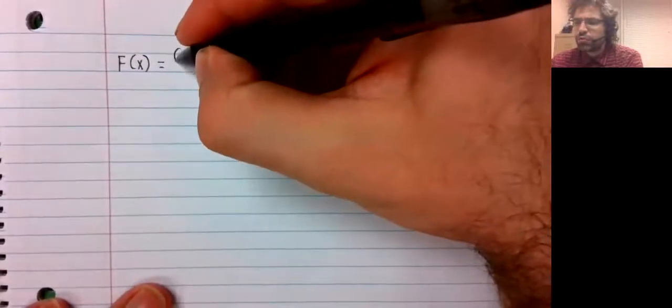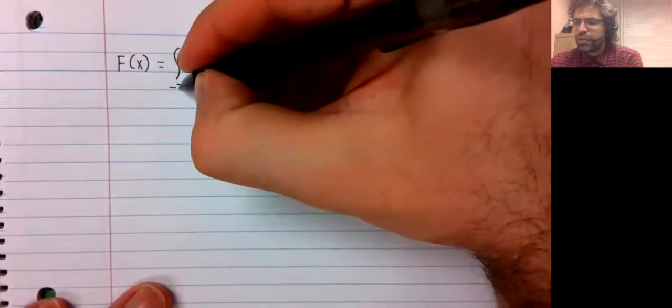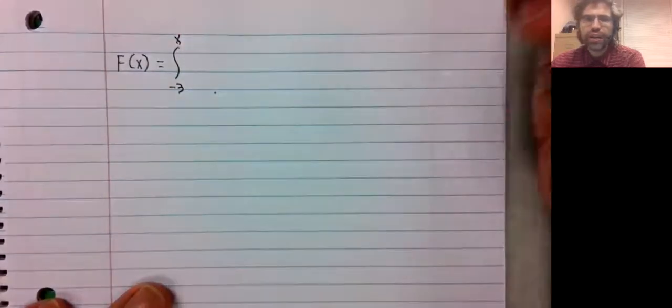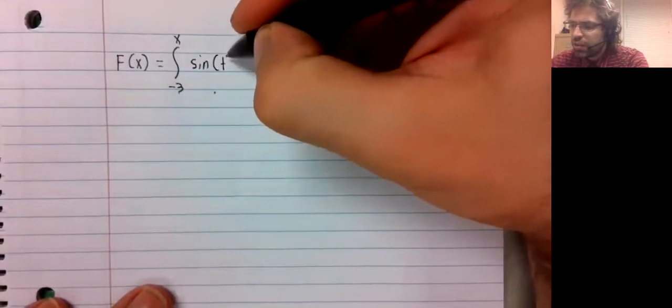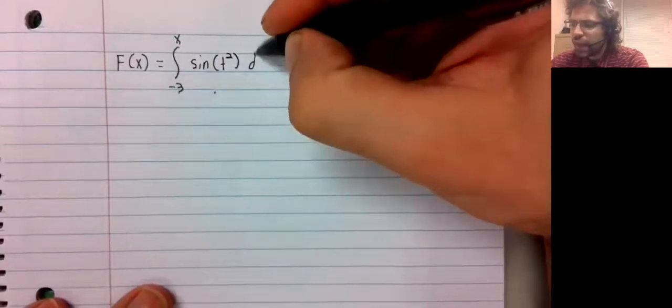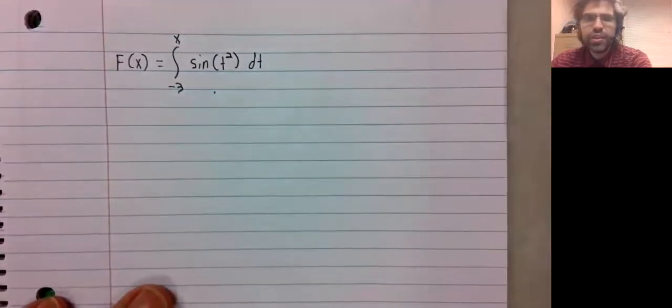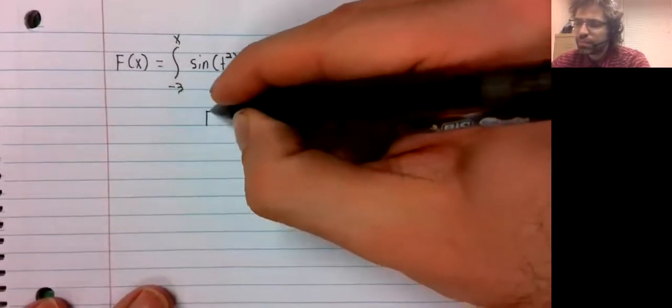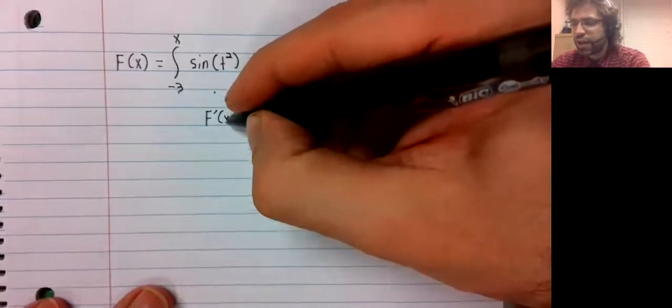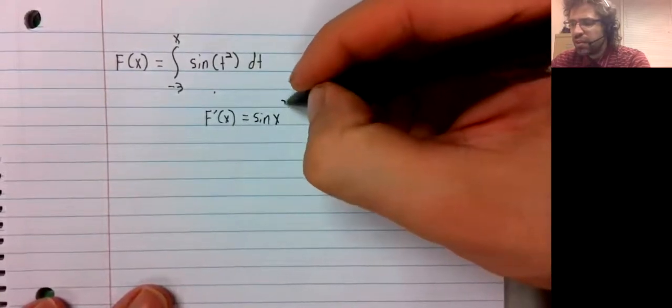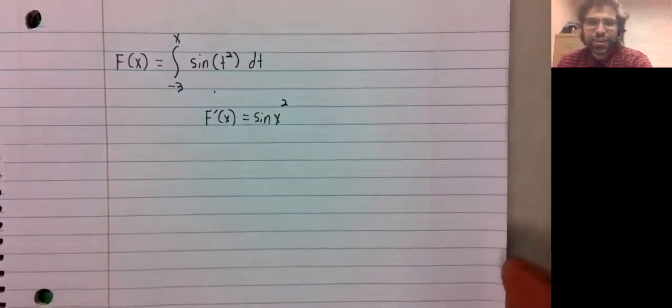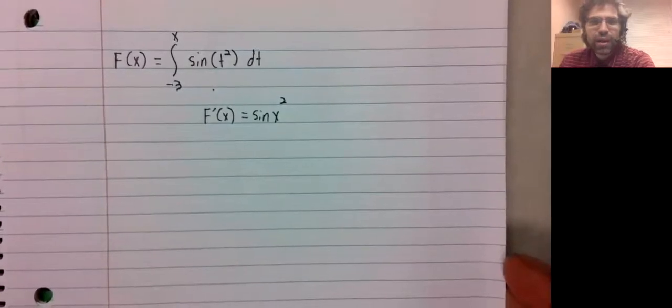Let's let capital F of X be the integral from negative 3 to X of the sine of T squared dT. F prime of X is the sine of X squared. Every bit as simple as that.